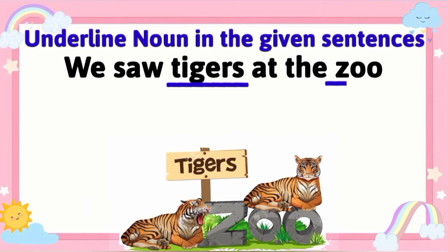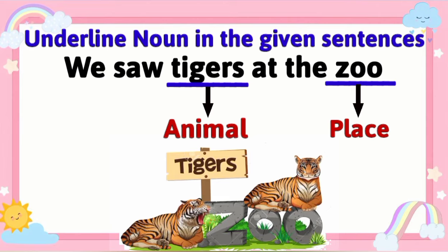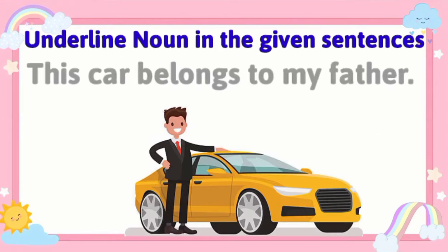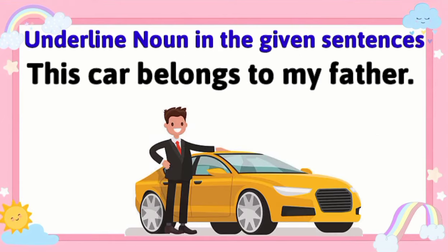'We saw tigers at the zoo.' In this sentence, the words tigers and zoo are both nouns. Tigers is the name of an animal and zoo is the name of a place. So tigers and zoo are both nouns.